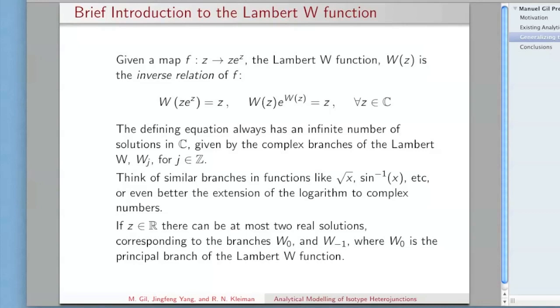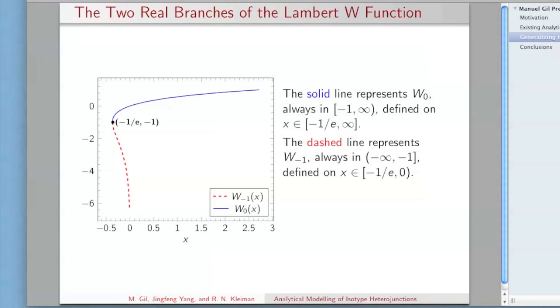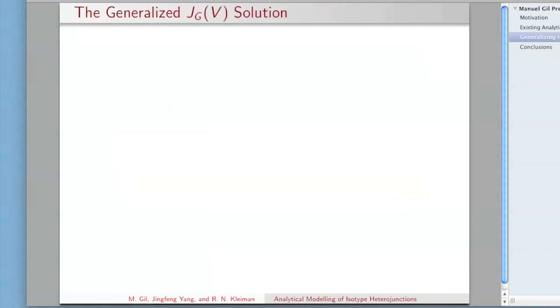If your argument is a real number, then you have at most two real branches, and we call them the W-0 branch and W-1 branch. The solid line is going to be the principal branch, which is an increasing function defined for X being bigger than negative 1 over e. The dashed line is a decreasing function, the negative 1 branch, defined for X between negative 1 over e and 0. The key point here is that your real values are going to exist only if X is bigger than negative 1 over e, and the unique values are going to exist only if X is positive.